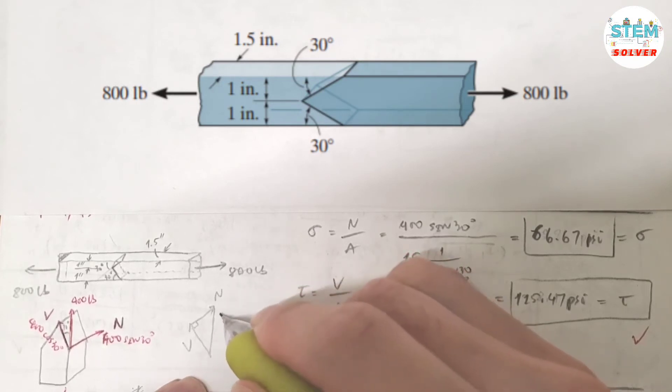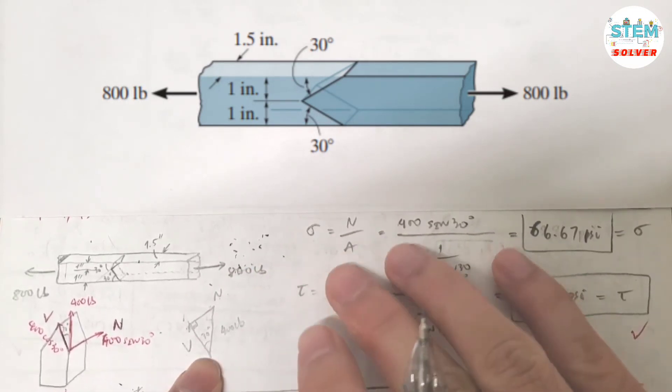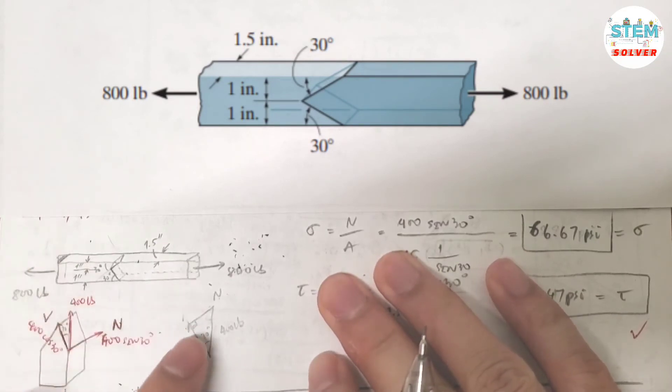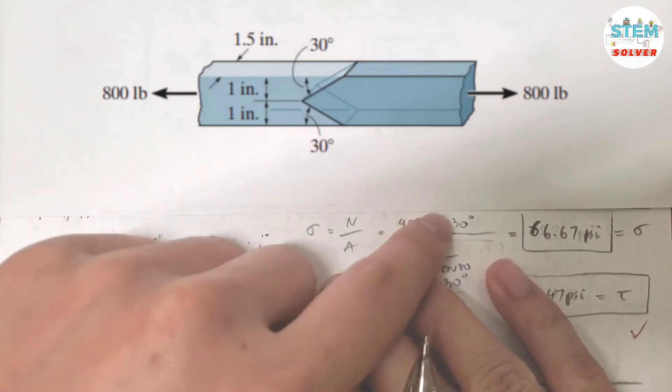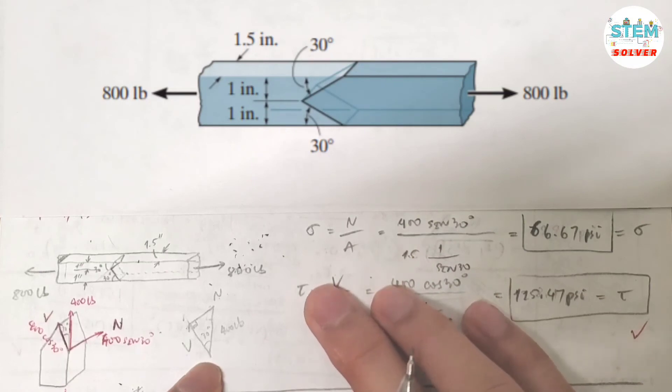You know this angle is 30 degrees, so the normal force is equal to 400 times cosine 30, which is what I have over here. The area, what's the area? The area of this plane is... you have this one in terms of the width of that.